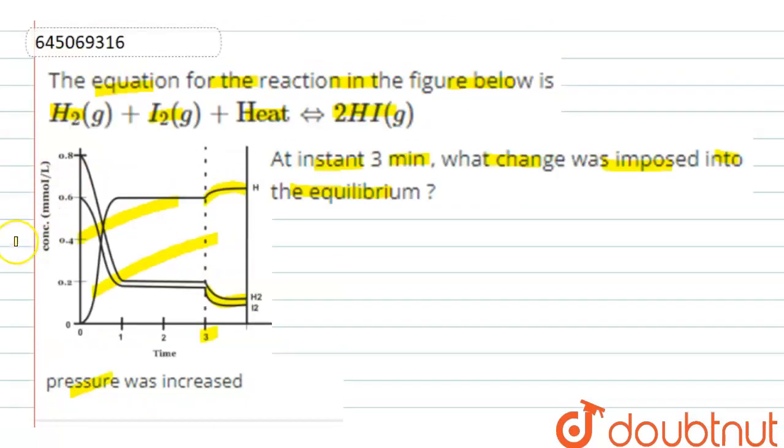Let us see what will happen if we do any change to this equilibrium. The equilibrium is H2 plus I2 gives 2HI. Here, number of moles of reactants is 2 and number of moles of products is also 2. Therefore, there is no change in number of moles.